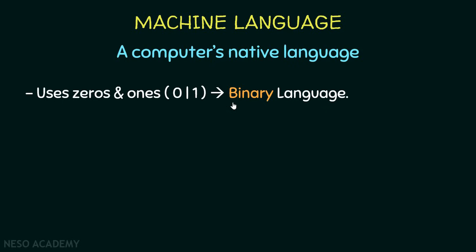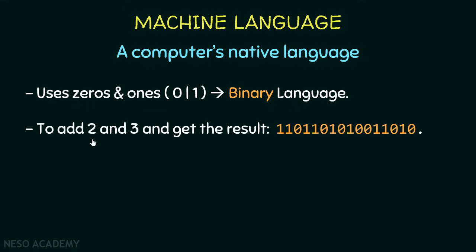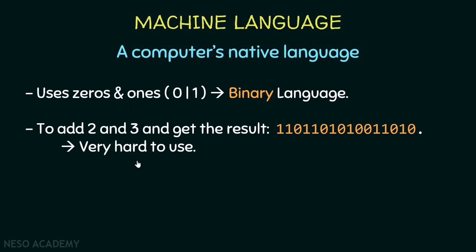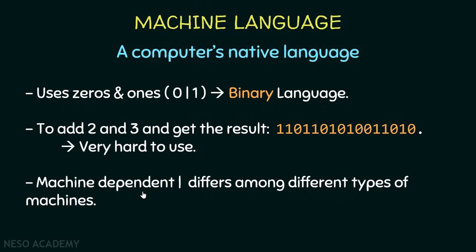Machine language is called the binary language because binary means two things — we are using two digits, zero and one. For example, if we want to add two numbers, two and three, and get the result, we would write something like this — an instruction written using the machine language, which is a group of ones and zeros. This is only one instruction just to get the sum of two and three. As you can see, this is very hard to use. Moreover, machine language is machine dependent, so it differs among different types of machines — this code might work on one machine and not on another.